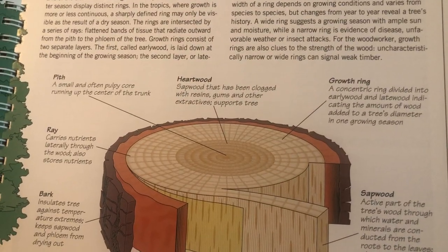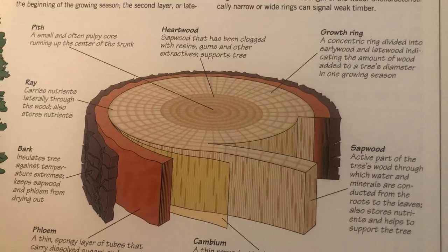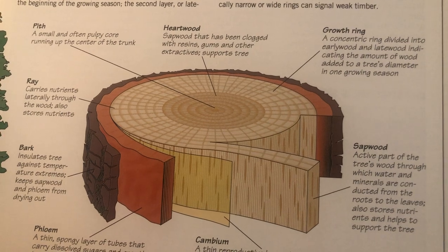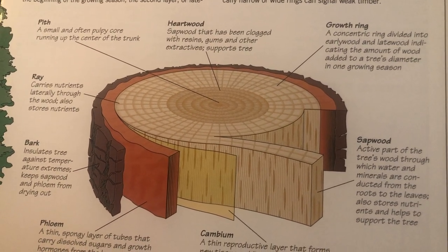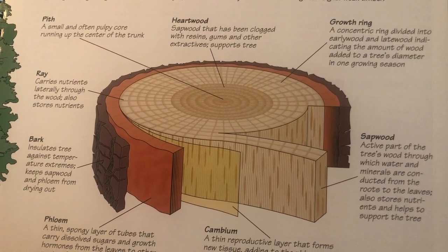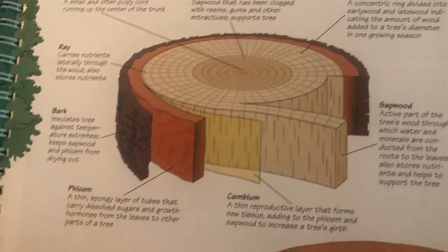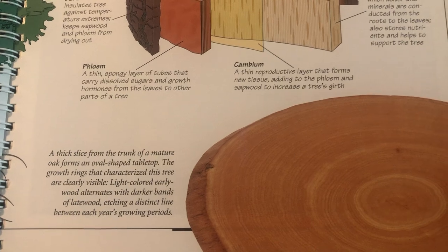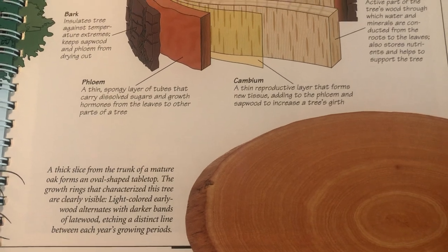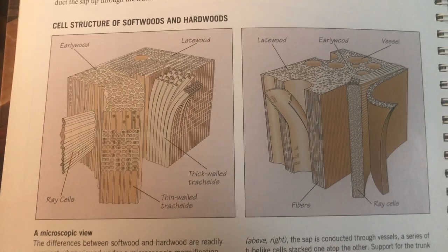Sapwood — the active part of the tree's wood through which water and minerals are conducted from the roots to the leaves. It also stores nutrients and helps support the tree. That's actually pretty interesting — I had no idea. We really weren't going to get into that, but here we are.